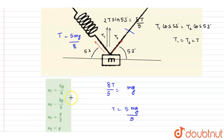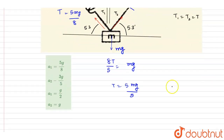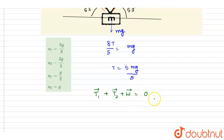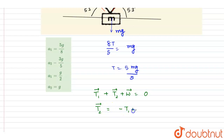And mg in the downward direction. Now we want the acceleration of the block. Earlier, the vector sum T1 + T2 + W was equal to zero because the system was in equilibrium. Now T2 becomes zero, so T2 vector equals T1 vector plus W vector — these are the only two forces acting.